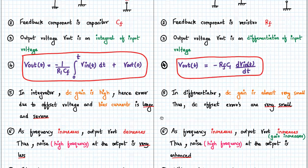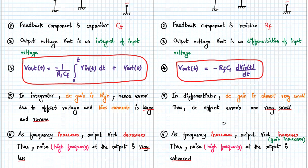In an integrator, the DC gain is very high — at F equal to 0, the gain is very high. Hence the error due to offset voltage and bias current is very large and severe, which is a drawback of the ideal integrator. Whereas in a differentiator, DC gain is very small at low frequencies, so the DC errors are very small.